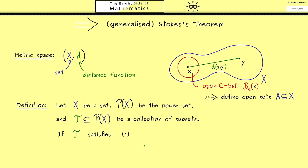Now the first one is very simple. We just say that the empty set and the whole space X are open sets. More precisely, they are elements of the collection T.